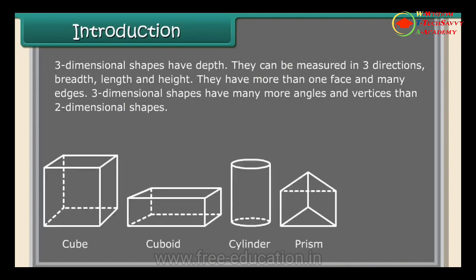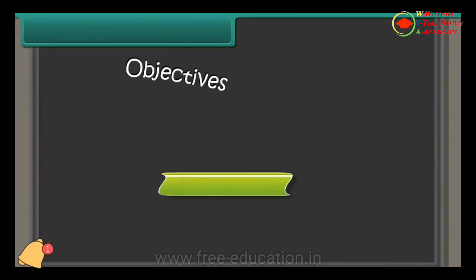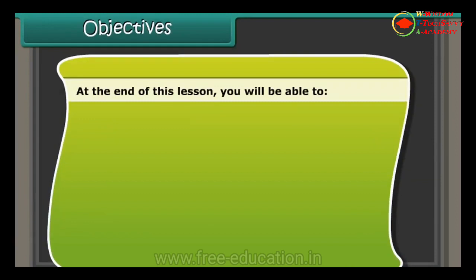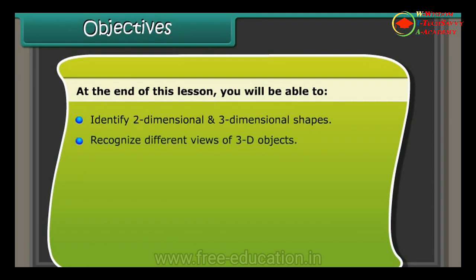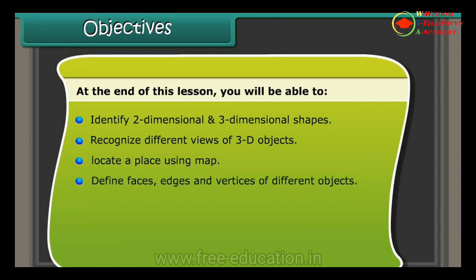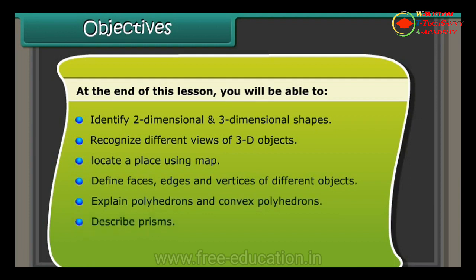Objectives: at the end of this lesson you will be able to identify two-dimensional and three-dimensional shapes, recognize different views of 3D objects, locate a place using a map, define faces, edges and vertices of different objects, explain polyhedron and convex polyhedrons, describe prisms, discuss pyramids, and apply Euler's formula.